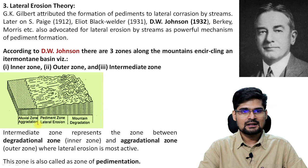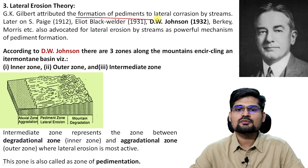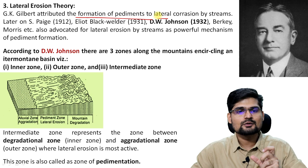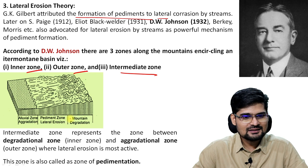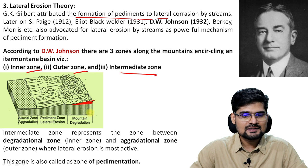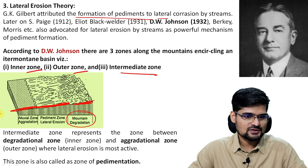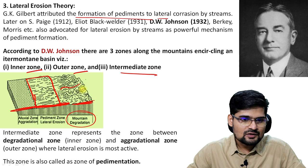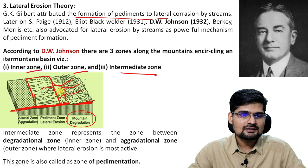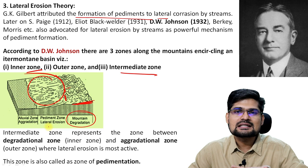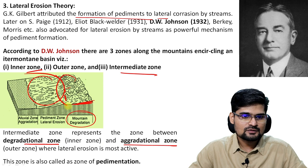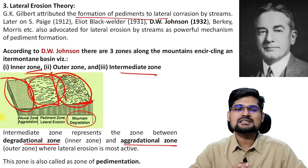Lateral erosion theory: G.K. Gilbert attributed the formation of pediments to lateral corrosion by streams. This idea was further taken by D.W. Johnson. He discussed it in terms of three zones — inner zone, outer zone, and intermediate zone. The inner zone is where the mountains are degraded. The intermediate zone is where pedimentation occurs, and then you have the alluviation zone. Streams have this lateral erosion and gradually recede back, and finally these pediments are formed. The intermediate zone — between degradation and aggradation — is where pedimentation happens at maximum. This concept was given by D.W. Johnson in 1932.